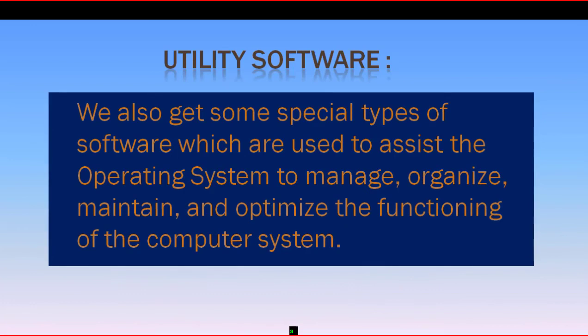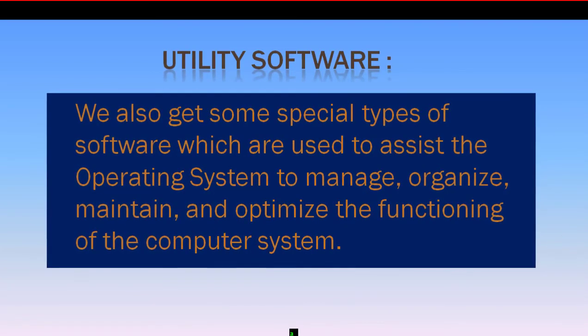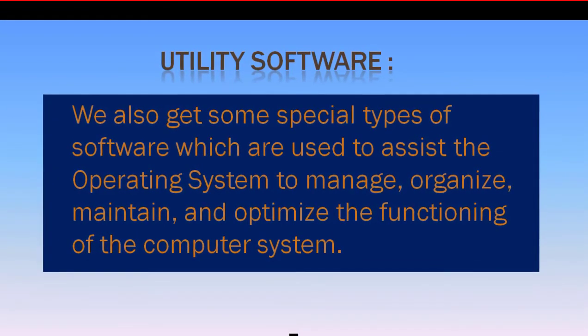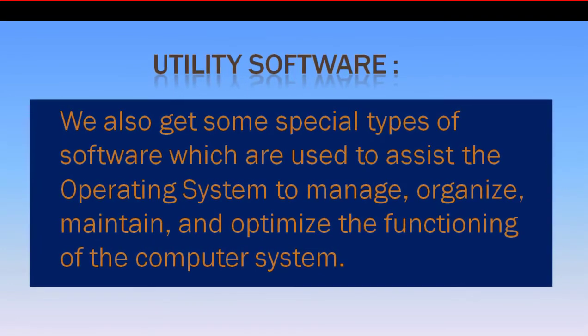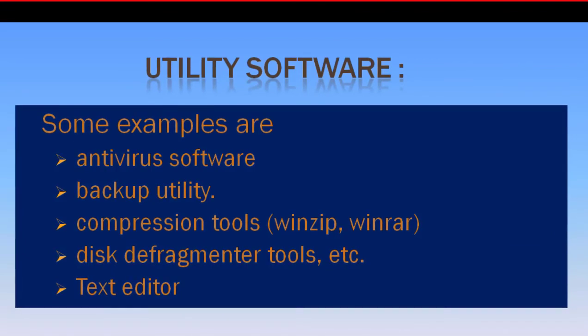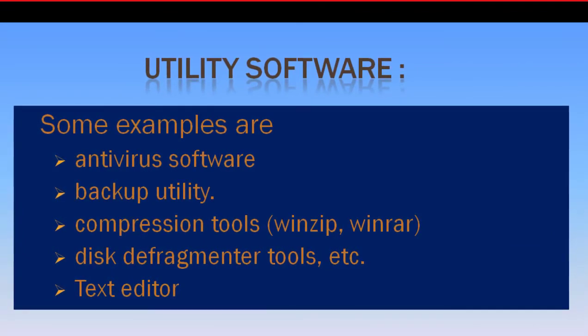We also get a special type of software called utility programs — utility software. These are used to assist the operating system to manage, organize, maintain, and optimize the functioning of the computer system.